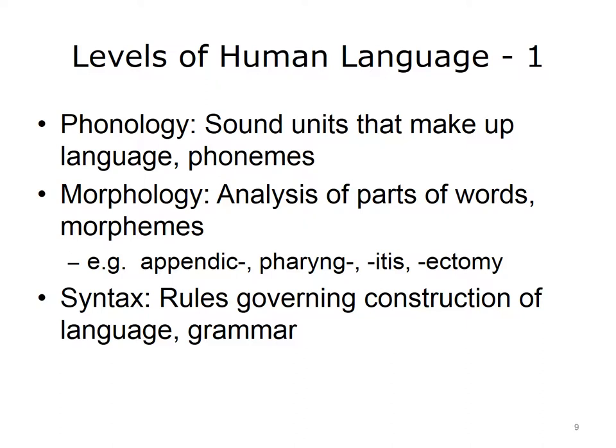Let's take a more detailed look at human language to understand the applications and limitations of NLP tools and clinical documents. Linguists talk about the levels of human language. We begin with phonology — the sound units called phonemes. Next is morphology, the analysis of parts of words called morphemes. Sometimes a whole word is the morpheme, but other times there may be bound morphemes. For example, many anatomic locations such as the appendix are bound to another word such as -itis, indicating inflammation. Thus, appendicitis indicates inflammation of the appendix.